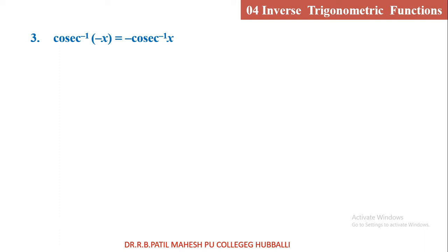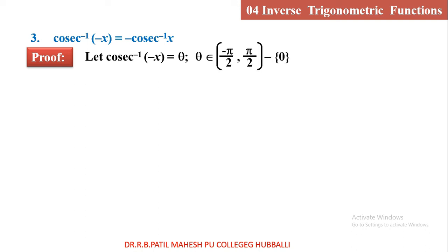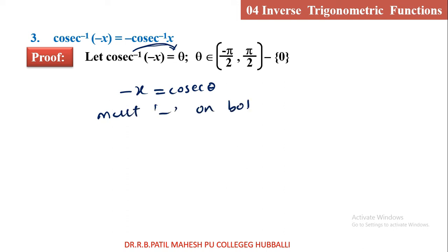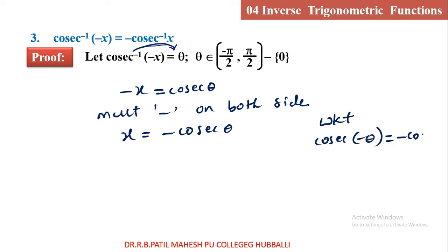Cosec inverse of minus x is equal to minus cosec inverse x. Let cosec inverse of minus x equal to theta, where theta is in the interval minus pi by 2 to pi by 2, excluding 0. Taking cosec inverse to the right side: minus x is equal to cosec theta. The same pattern — multiply minus on both sides: x is equal to minus cosec theta.